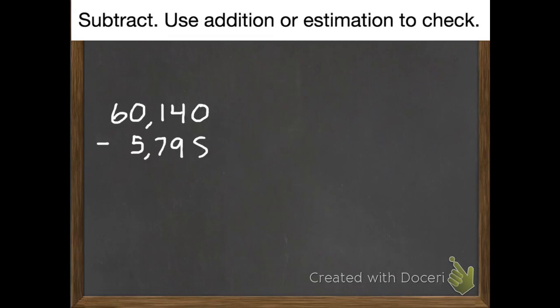Second example. 60,140 subtract 5,798. Start with my ones place value. 0 subtract 8. I need to borrow from my tens.